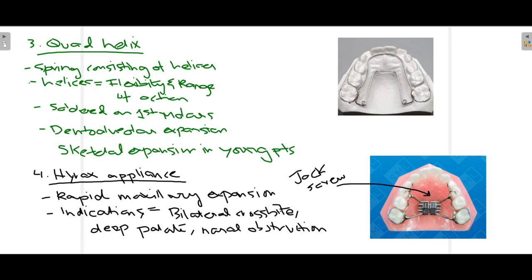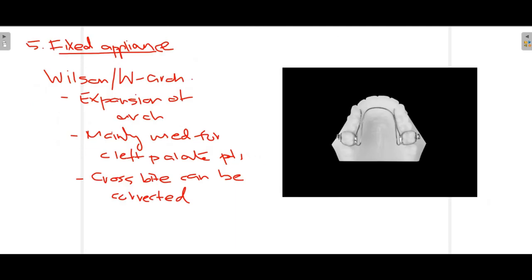Lastly, we have the Wilson's W-arch appliance — a fixed appliance used for correction of posterior crossbite. It is mainly used for expansion of the arch, with bands placed over the molars and forces exerted in the buccal direction. It was initially used mainly for cleft palate patients, but patients without cleft palate can also be treated with the W-arch appliance for correction of crossbite by providing expansion forces.